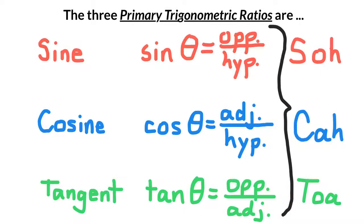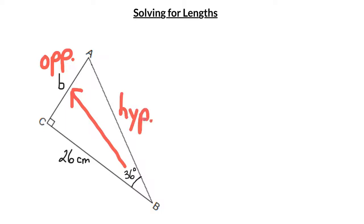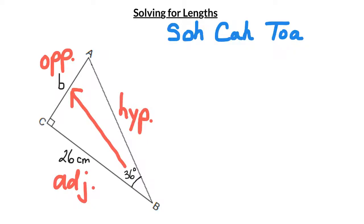You can use these primary trigonometric ratios to determine lengths and angles in any right triangle. The first step is labeling your triangle. In this case, my reference angle is 36 degrees. Directly across from it, that's my opposite side. The hypotenuse is always directly across from the 90 degree angle, so that's my hypotenuse. The other side is my adjacent side. I always write out my acronym SOH CAH TOA in order to determine which ratio to use to solve the problem. In this case, I want to solve for the length of B, which is the opposite side. The only other length that I know is 26 centimeters, and that's my adjacent side.